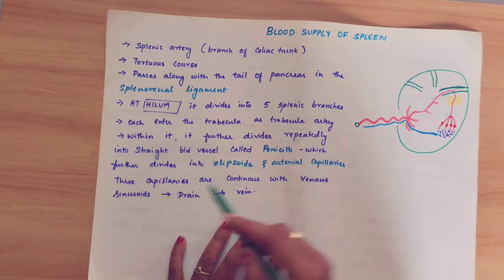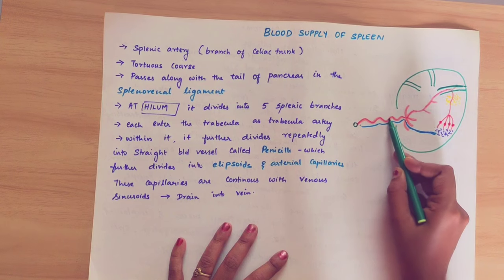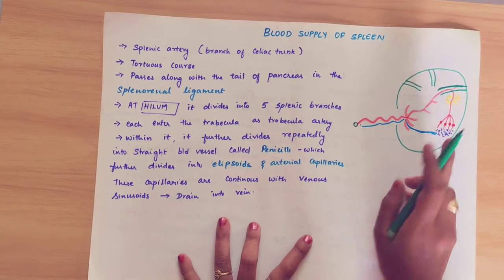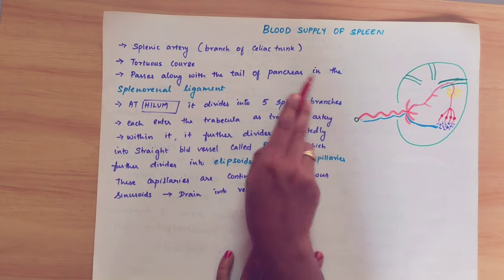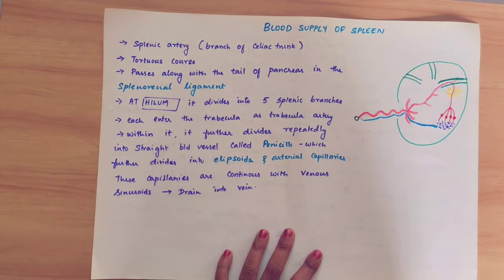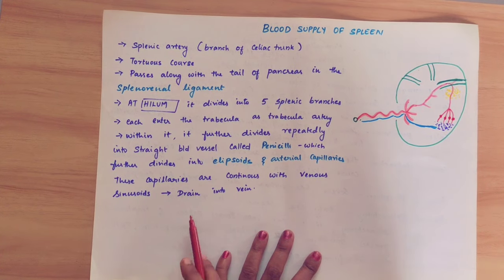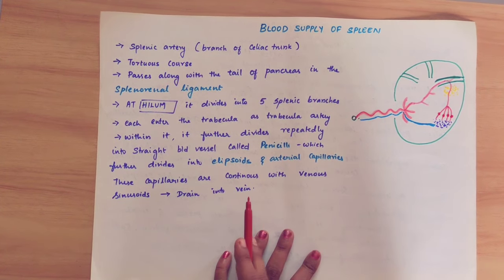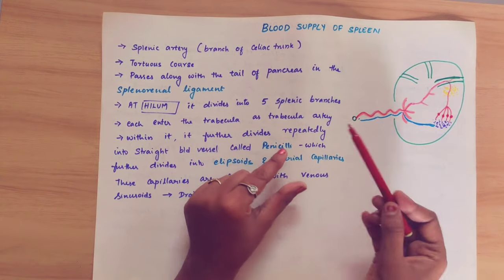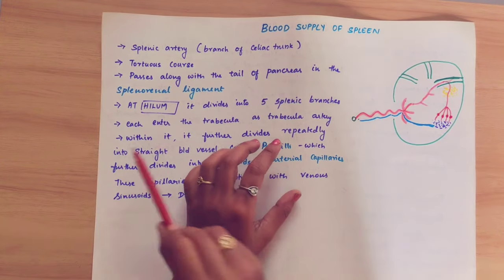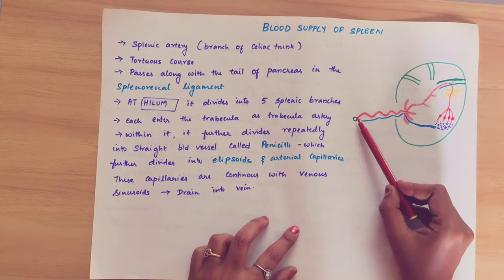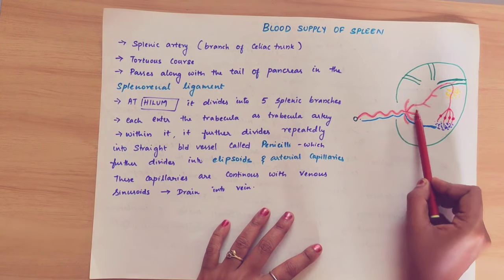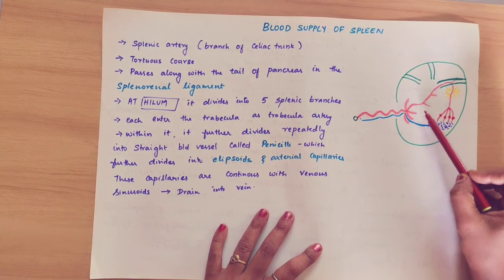The splenic artery has a tortuous course. It passes along with the tail of the pancreas in the splenorenal ligament. We have already discussed the ligaments of the spleen. The ligament passes along with the tail of the pancreas and the splenic artery. The splenic artery reaches the hilum of the spleen.